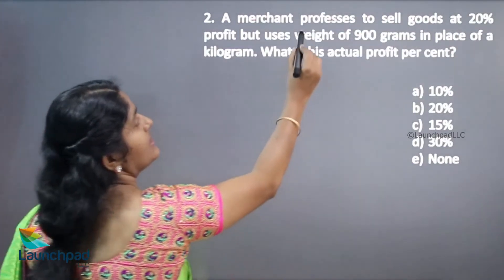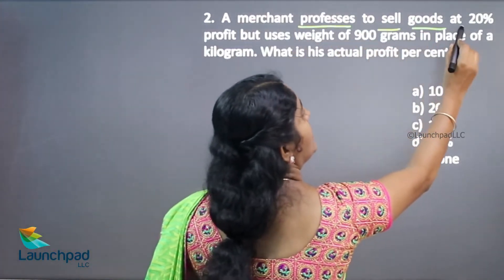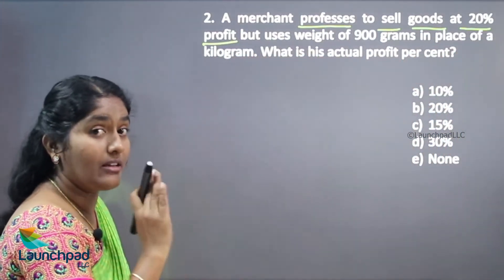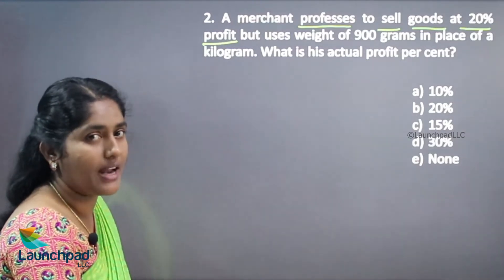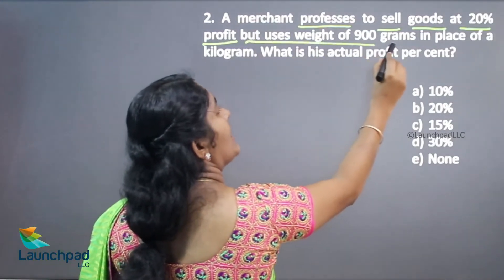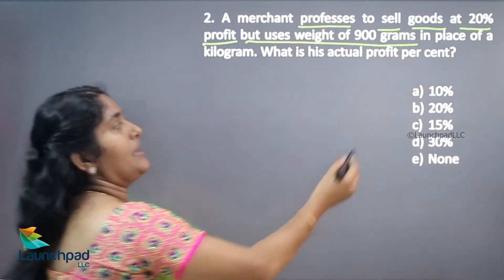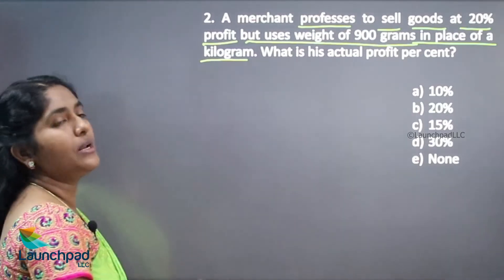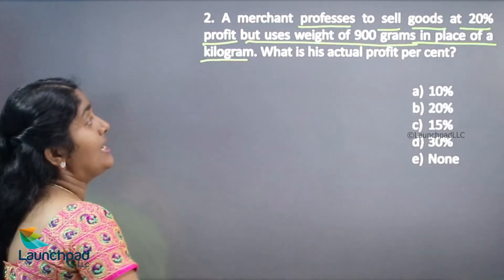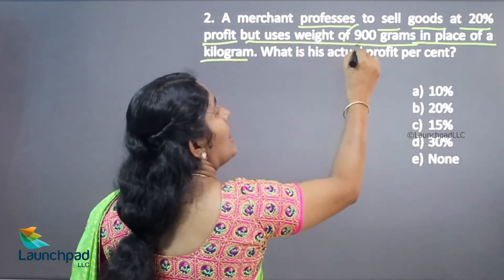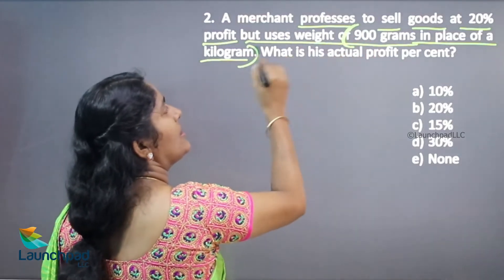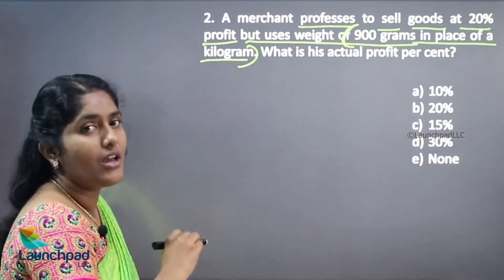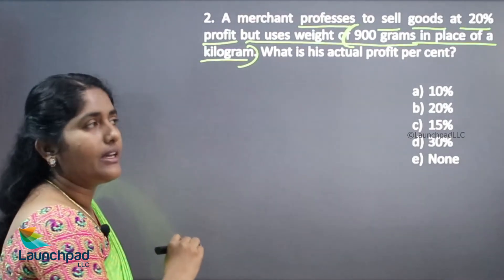Moving to the next question: a merchant professes to sell his goods at 20% profit — already fixed, he wants to gain exactly 20% on this transaction. But he uses a weight of 900 grams in place of a kilogram. What is the actual profit percentage? Here, the person already has a profit: he gained 20%.